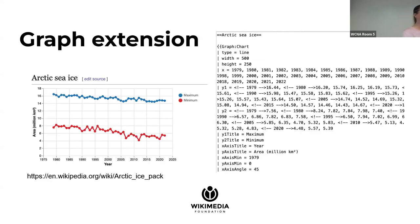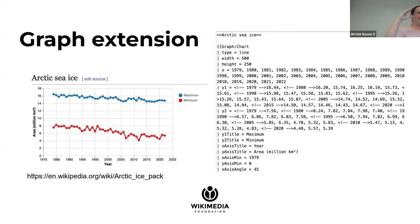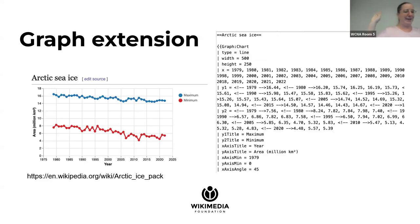This is what the graph extension was. It used a series of templates, and underneath it was tags — like an HTML tag for a graph — and then it put a bunch of JSON inside the tag with all the data. It did a lot of things, and then we had these graphs.